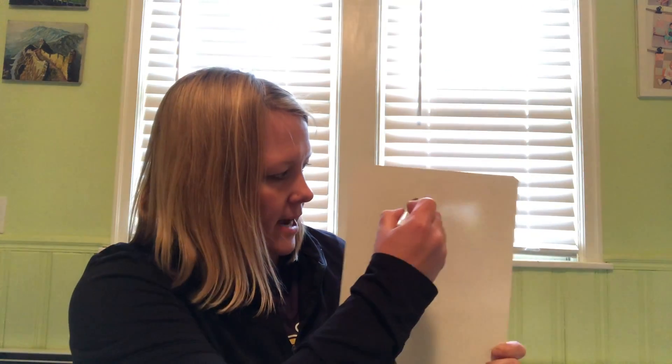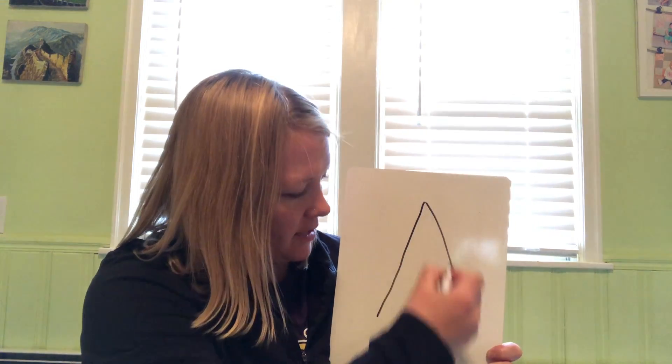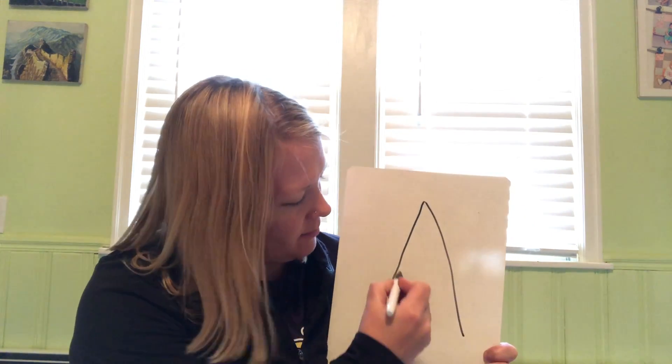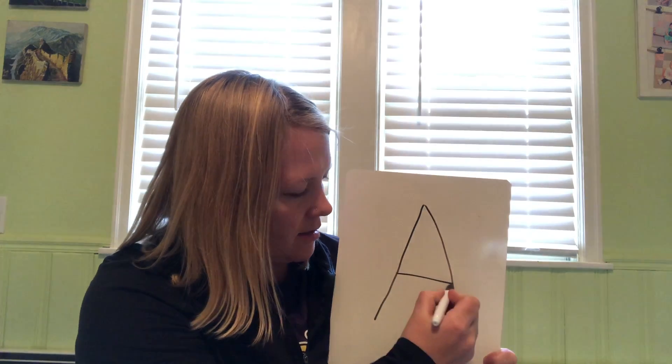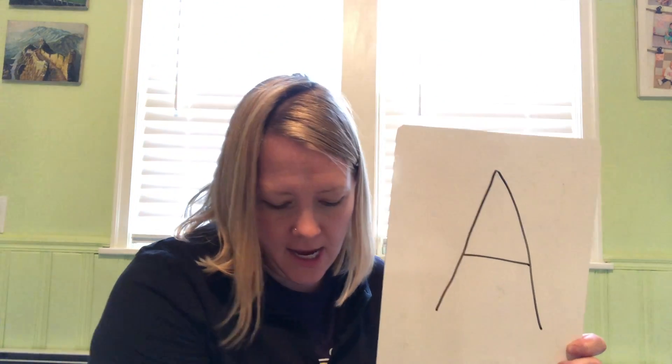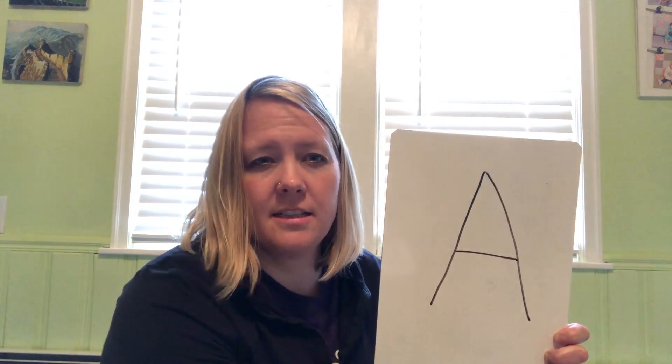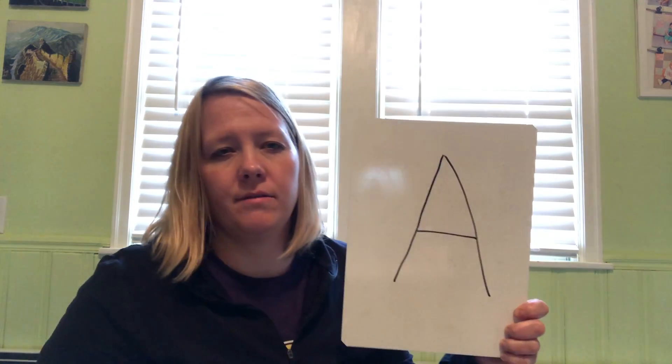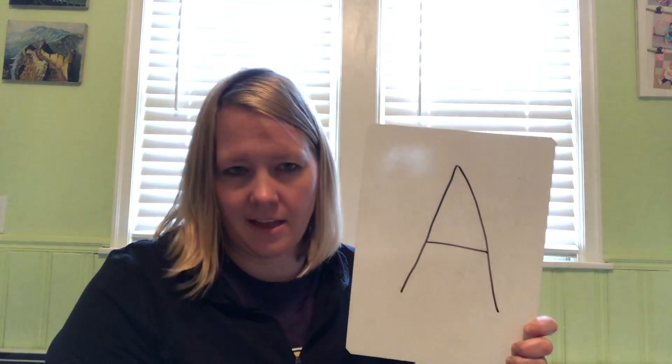All right, we start at the top, we slant down, we go back to the top, we slant down again, and then we cross in the middle. What letter is that? A, A, A. A is the name of this letter.